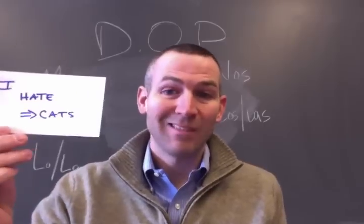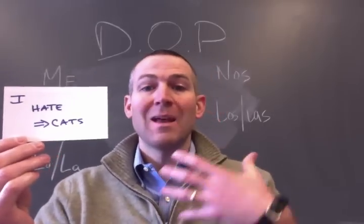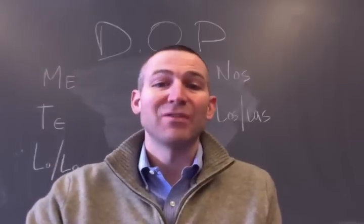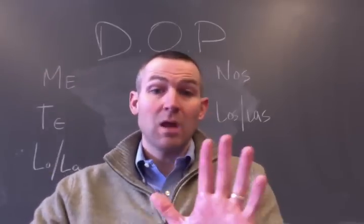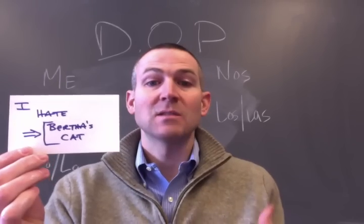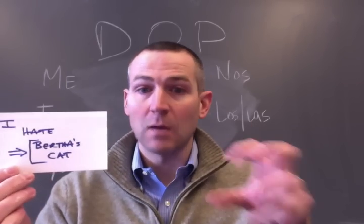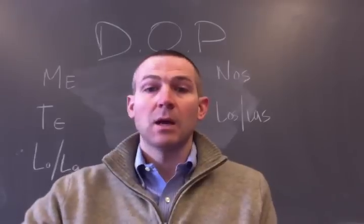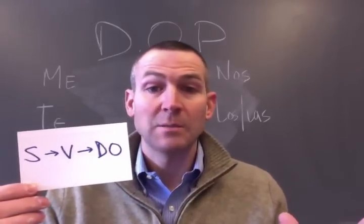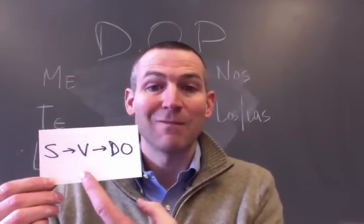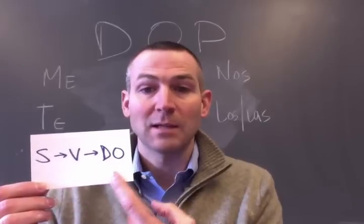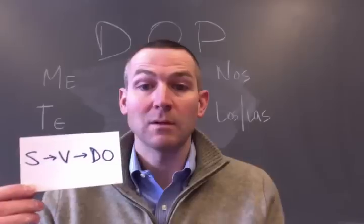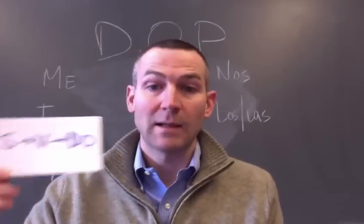Same token — I hate cats. The verb is hate; who or what's getting hated? The cats are. And right now you're going, well, that's not fair, you shouldn't hate all the cats. Okay, I just hate Bertha's cat. I as the subject, I'm hating — what do I hate? I hate Bertha's cat. That makes Bertha's cat the direct object. So in short, the direct object is the thing that's getting verbed. The subject verbs the direct object.